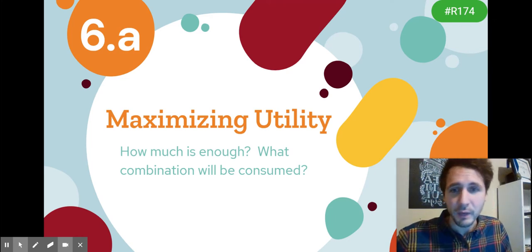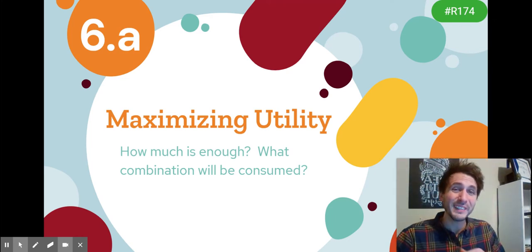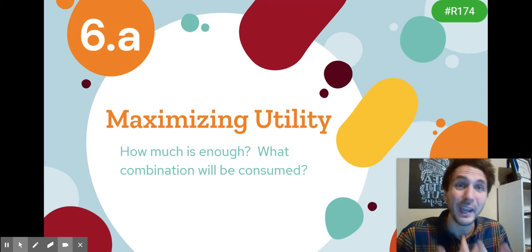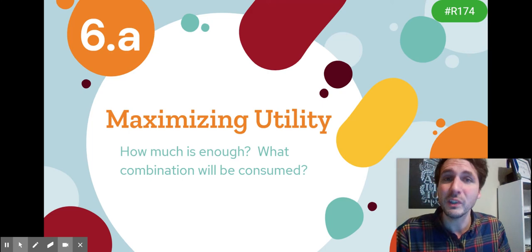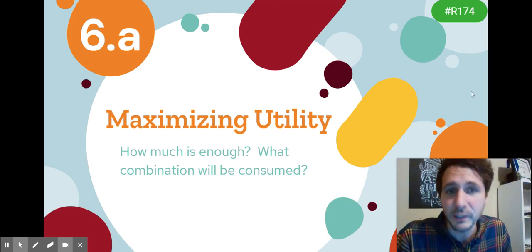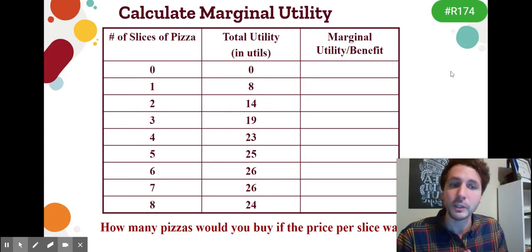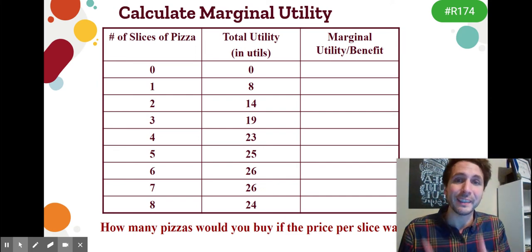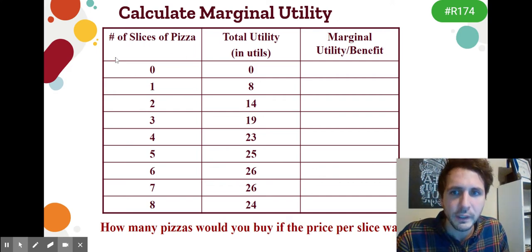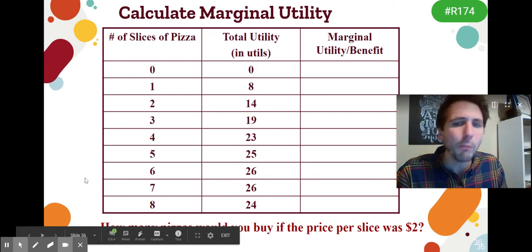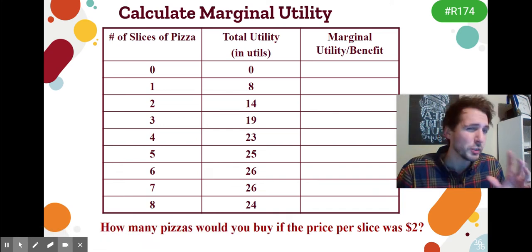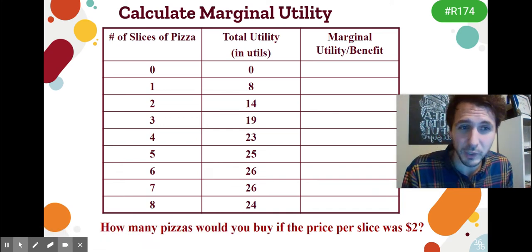The first half of this is trying to maximize utility. Remember, this is the central incentive for every individual. Every choice that we make is designed to maximize our utility or our satisfaction as an individual. So the question is, how much is enough? When will you stop? To answer this question, you're often given something like a chart with a quantity and a total utility, and you'll be asked how much pizza should you buy if the price per slice is $2.